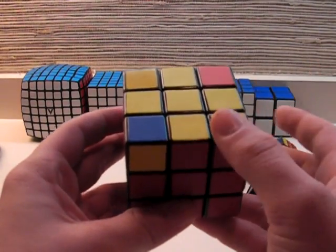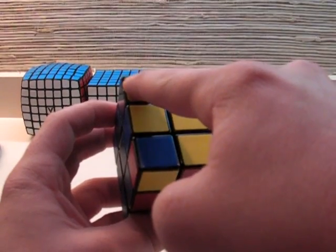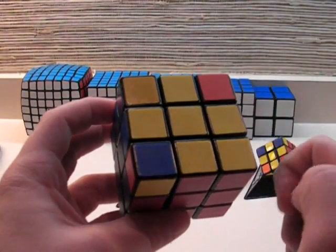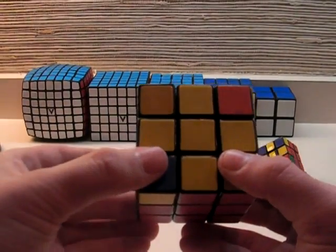So, when you perform this algorithm, it'll switch these three and leave the back left one the same. So, if you already have one back here, if you already have one solved, be sure to put it back here so you don't move it out of its correct spot.